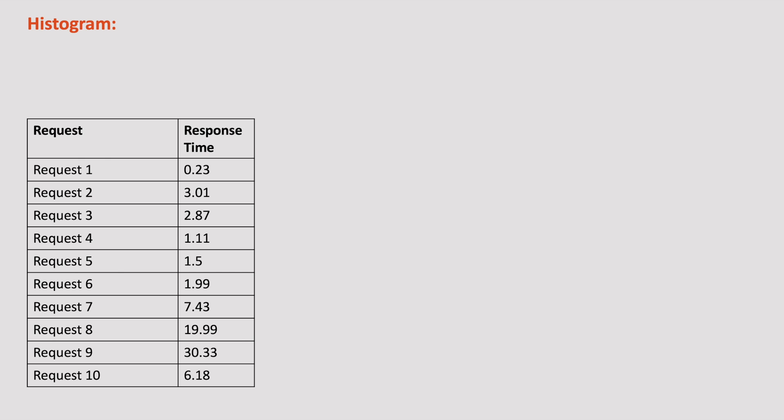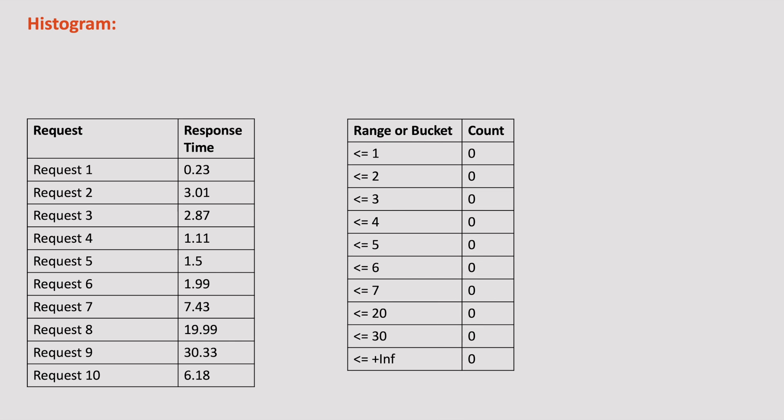Next is Histogram. Sometimes we want to check the performance of an application in different scenarios. For example, if these are my requests with their corresponding response times, I may want to check how many requests took 5 to 10 seconds to respond, which is unusual. For these kinds of scenarios, we should use Histogram. We can define ranges or buckets based on our needs. Based on these values, the bucket count increases. For example, request 1 took 0.23 seconds, which is less than or equal to 1, so this fits in all the buckets like less than or equal to 2, less than or equal to 3, etc. And the last bucket — less than or equal to infinity — counts all values. So the count increases for all buckets as it fits in all of them.